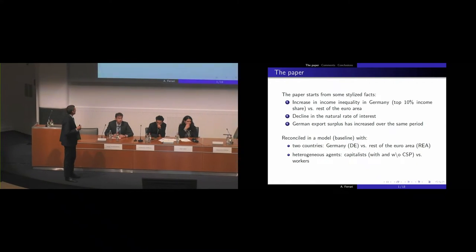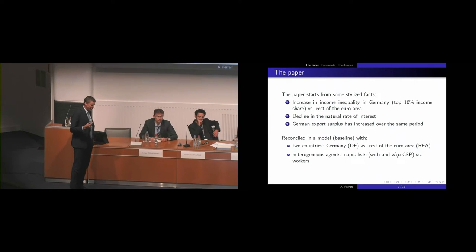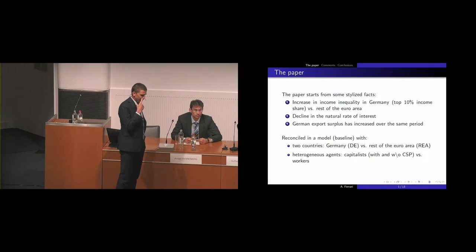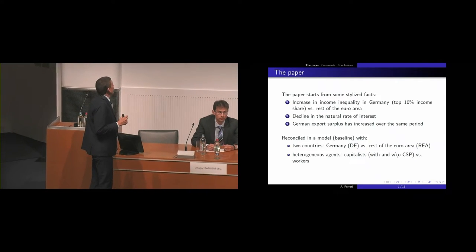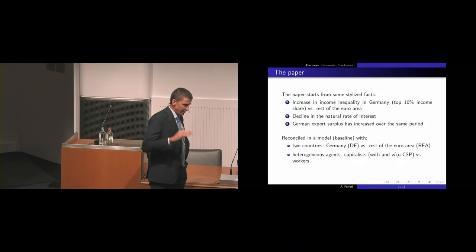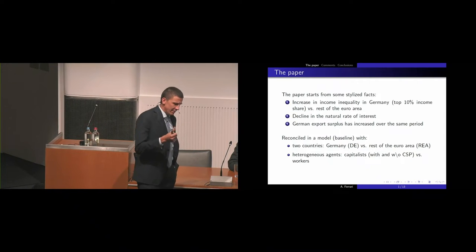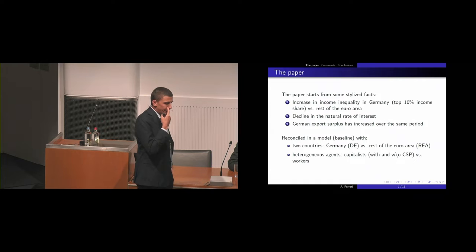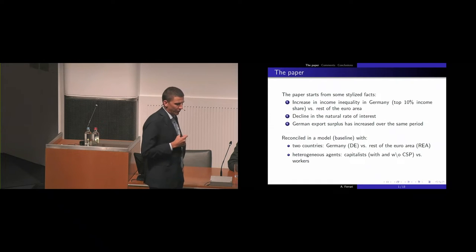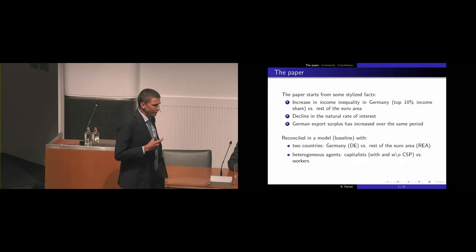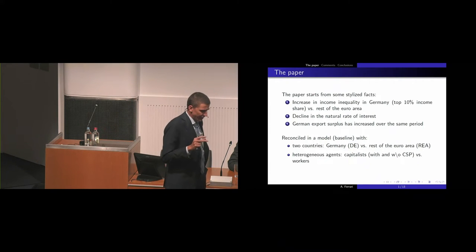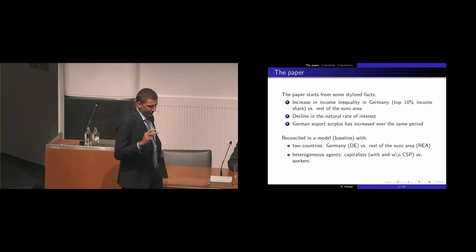It's still very preliminary, but I think it's very promising. The draft I received contains mainly the model, but I think there is a lot to learn and to extract from the paper. Very briefly, the summary of the paper starts from three different stylized facts: an increase in income inequality in Germany — by income inequality we mean looking at the top 10% income share — as opposed to the rest of the euro area, the decline in the natural rate of interest, and the German export surplus that we have seen increasing during the period. These three stylized facts are reconciled in a simple but clean model.